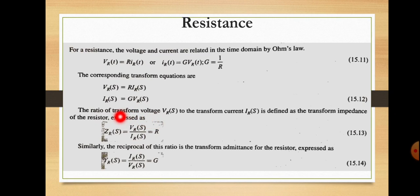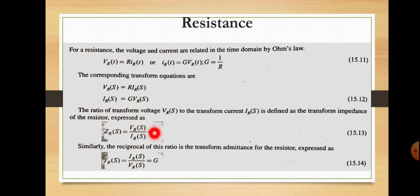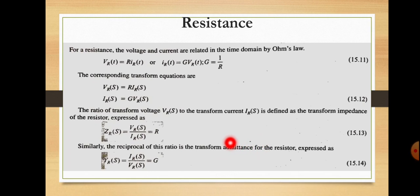The ratio of transform voltage Vr(s) to transform current ir(s) is defined as the transform impedance of the resistor. So Vr(s) / ir(s) = Zr(s), and since 1/G = R, the transform impedance Zr(s) equals R itself. Similarly, the transform admittance is Yr(s) = ir(s) / Vr(s) = 1/R = G.